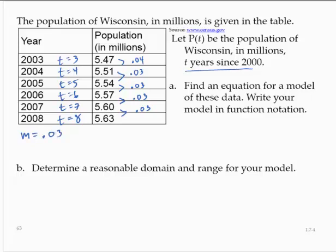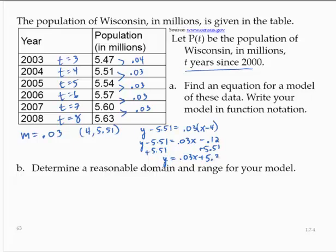And using one of the points, how about we just use the second point, 2004, so let's use (4, 5.51). So then we would have y minus 5.51 equals 0.03 times x minus 4. So y minus 5.51 is 0.03x minus 0.12, and adding the 5.51, you would have y equals 0.03x plus 5.39.